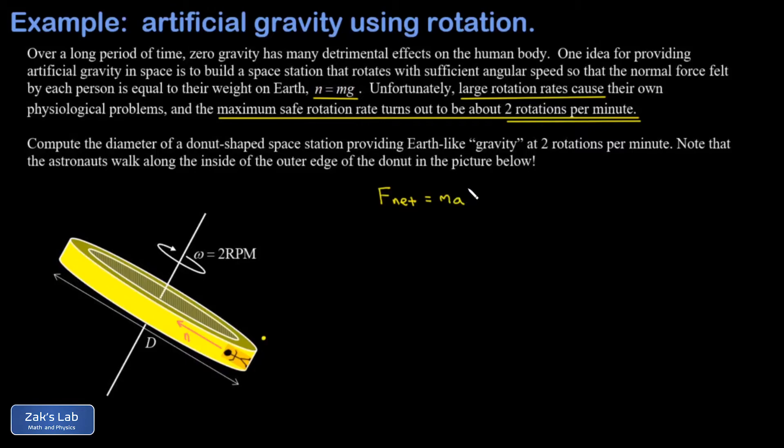We write down F net equals ma. The only force they're experiencing is that normal force. The easiest formula to remember for their centripetal acceleration is V squared over R, but that's not the most useful formula in this problem.